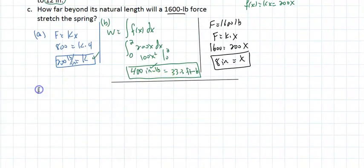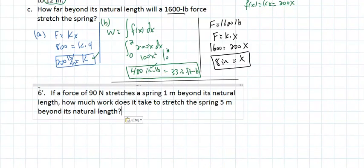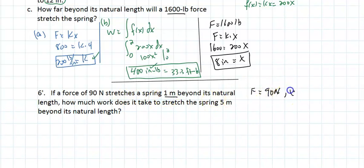Problem 6': If a force of 90 newtons stretches a spring 1 meter beyond its natural length, then F = kx gives us 90 = k times 1, so k = 90 newtons per meter.